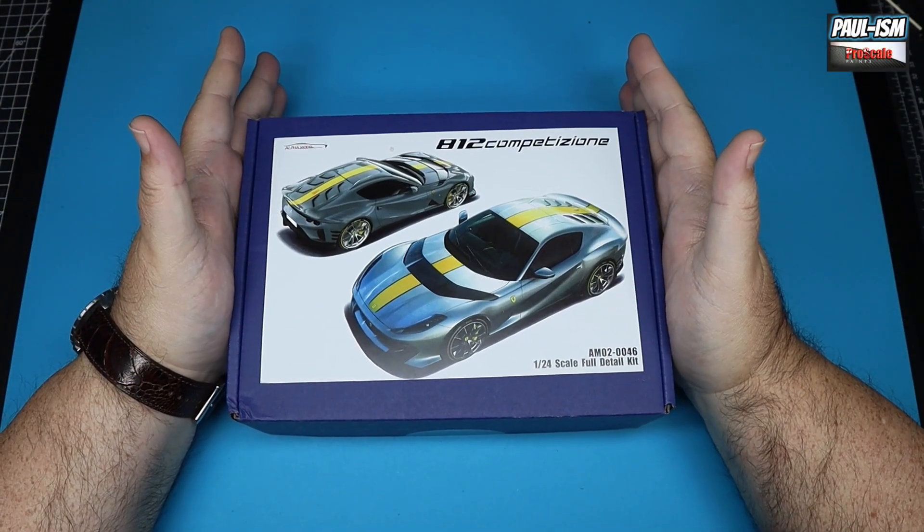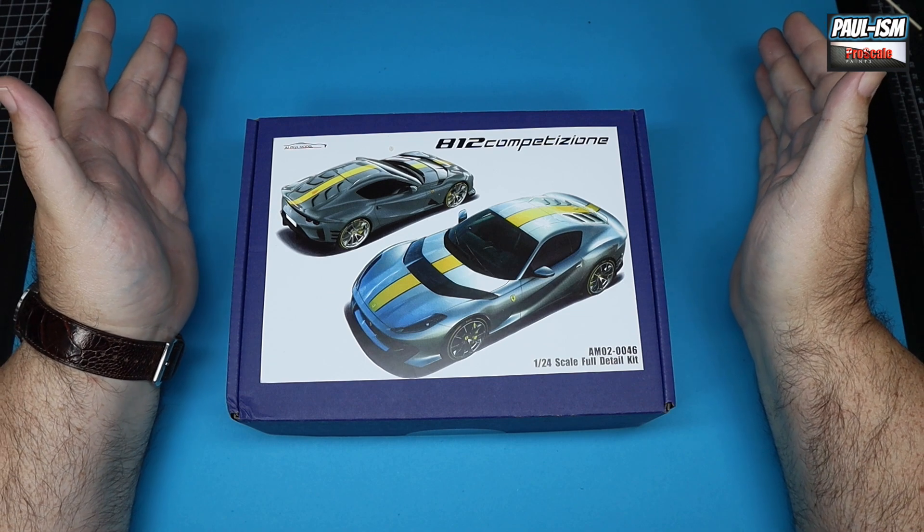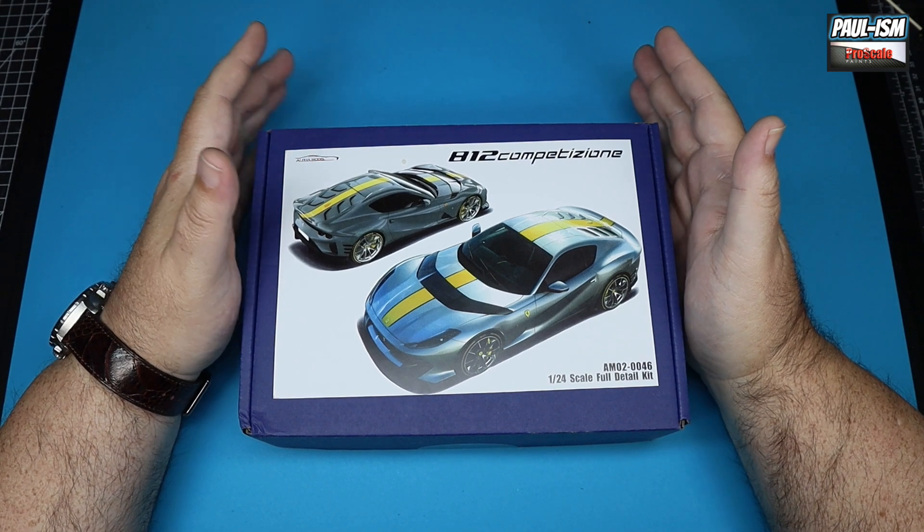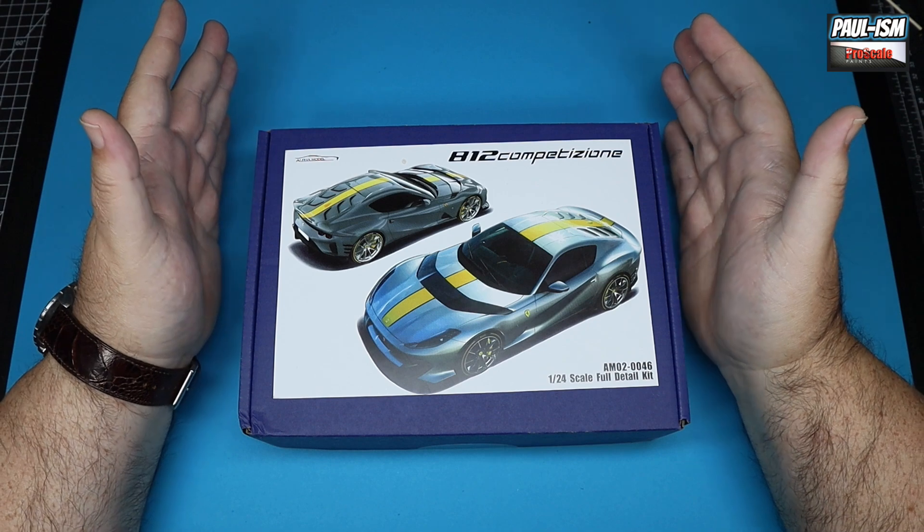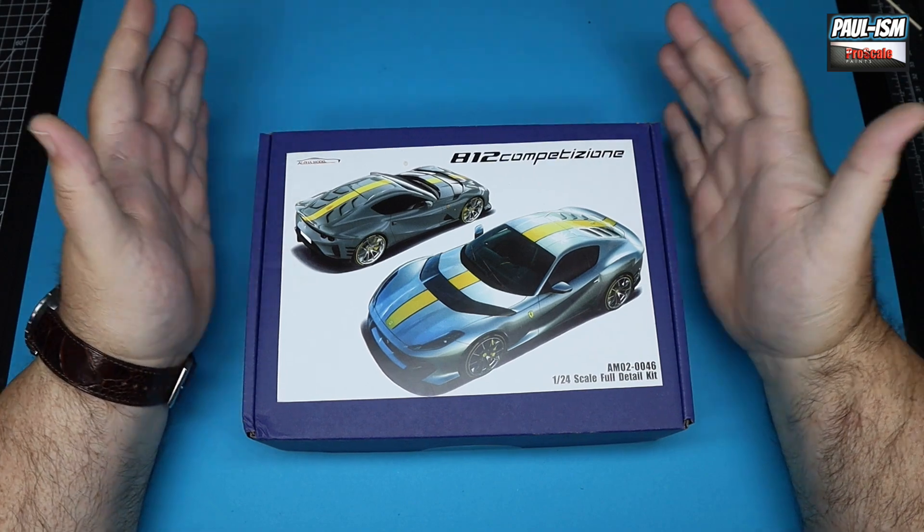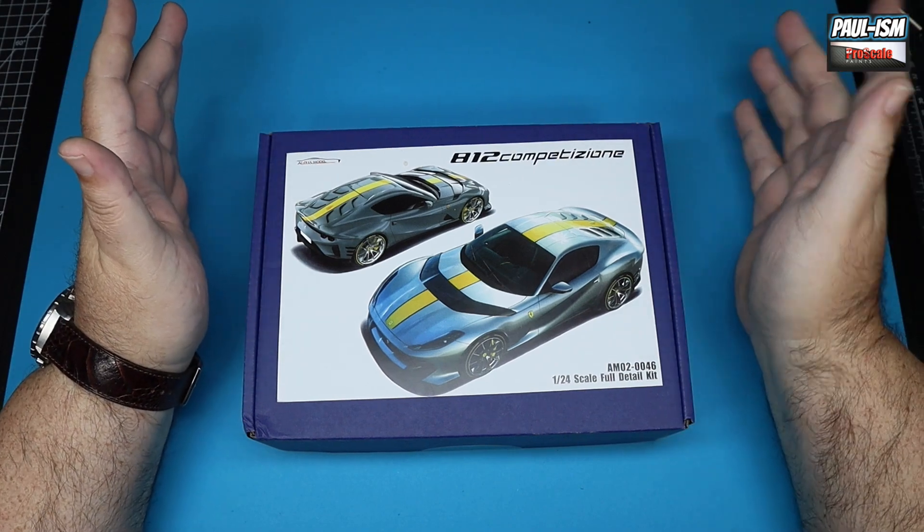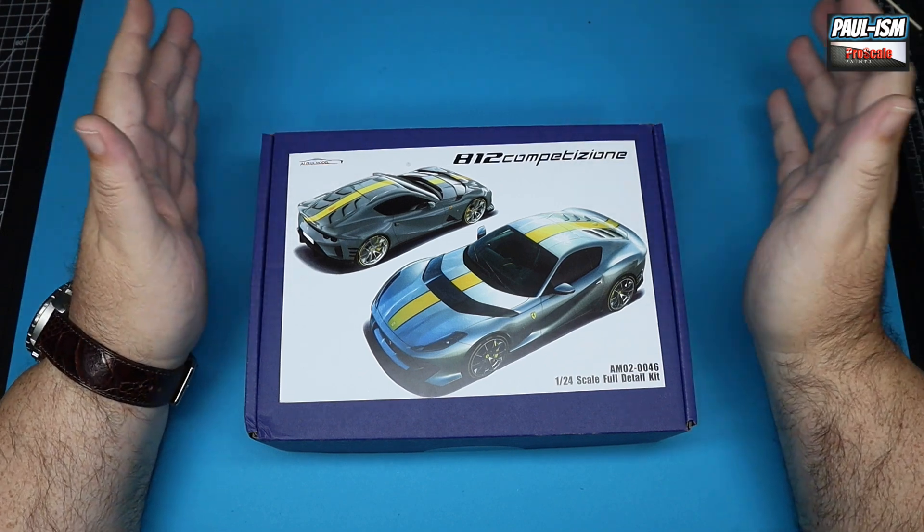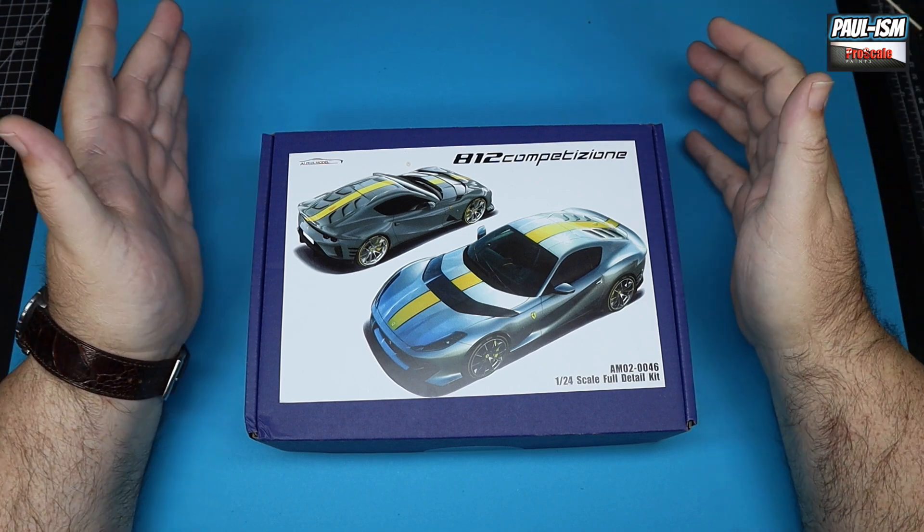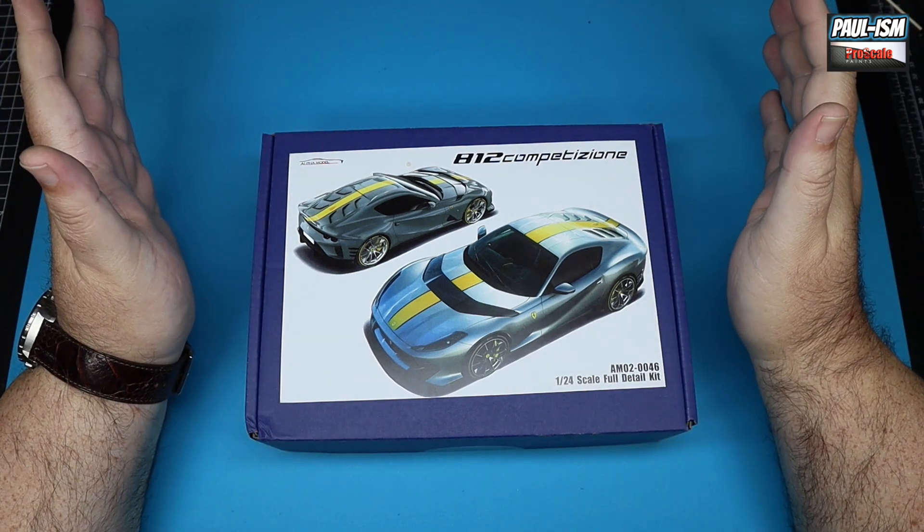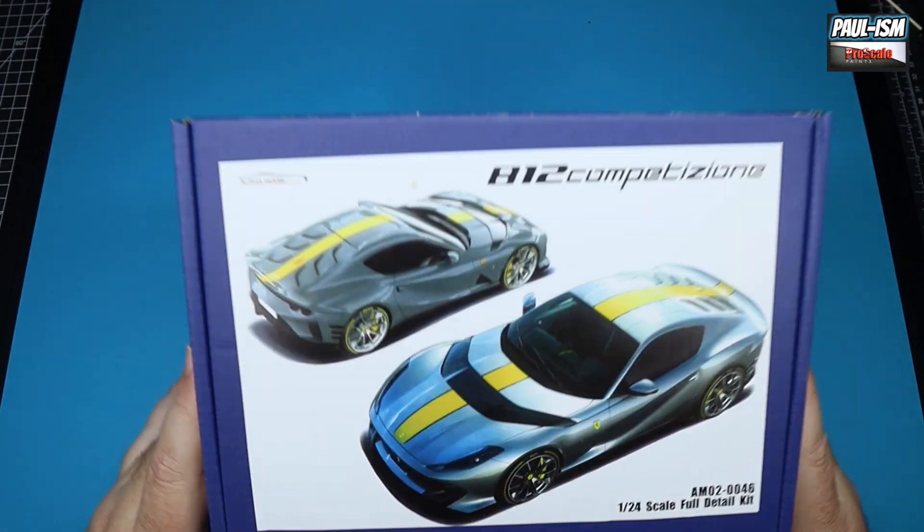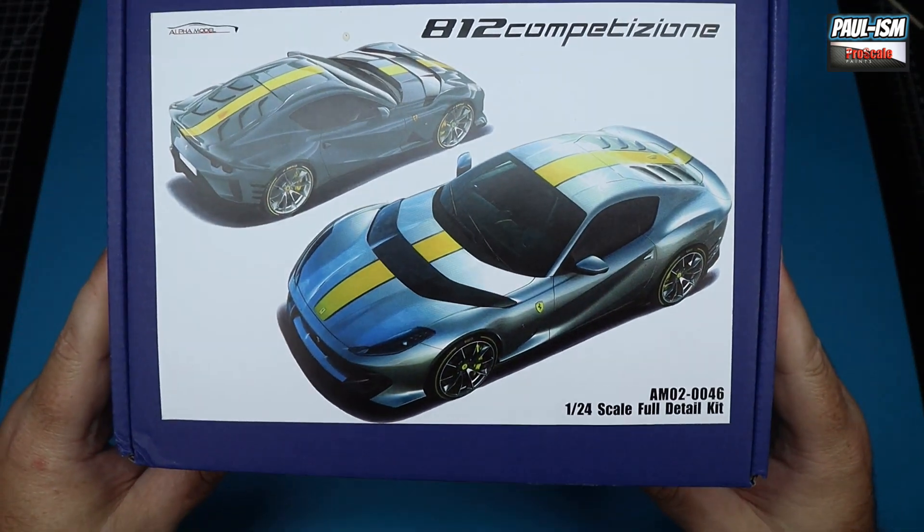Right then, so we've got Alpha Models 1:24 Ferrari 812 Competizione. I've already built the standard kit of this a while back, I think it was last year now. This is a different car altogether, this is the lightened, tuned, faster, more crazy Competizione. So I think this thing's like 800 odd horsepower, £450,000 to buy or something stupid, 6.5 V12, absolutely mental looking thing. And I'm so glad that Alpha Models released this version, because I think this is the better version of the kit. So we've got some really nice box art on the front, really like that.